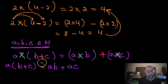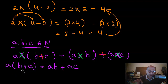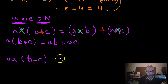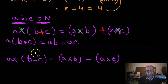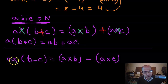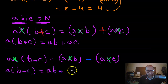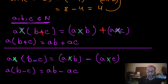The same applies to subtraction: a×(b−c) = a×b − a×c. This means multiplication distributes over subtraction as well. So in general, a(b−c) = ab − ac. Now we can apply this to our distance problem.